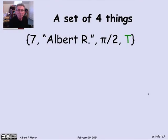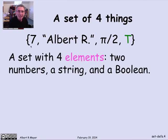Let's look at an example to pin things down. Let's look at this set of four things: it's got two numbers, pi over 2 and 7, a character string in quotes, Albert R, and the Boolean value true. Those are the four different things in it. They're of mixed type. You might not like to have a mixed type like this in a programming language, but mathematicians don't worry about such things very much.